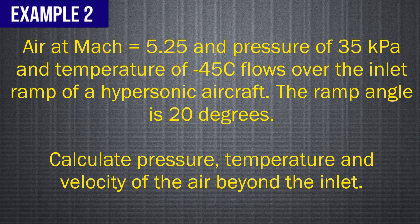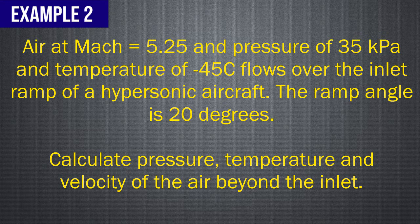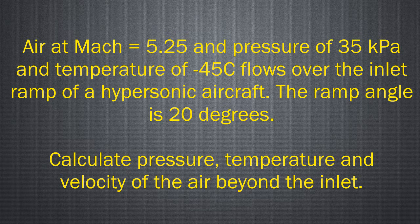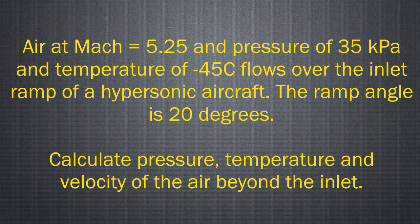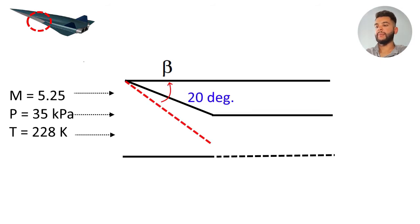Air at Mach 5.25 and a pressure of 35 kilopascals and temperature of negative 45 Celsius flows over the inlet ramp of a hypersonic aircraft. The ramp angle is 20 degrees from the horizontal. Calculate pressure, temperature, and velocity of the air beyond the inlet. For question 2 we have an oblique shock coming in. We have a Mach number of 5.25. We have pressure of 35 kilopascals and temperature when we convert that to Kelvin we get 228 K.